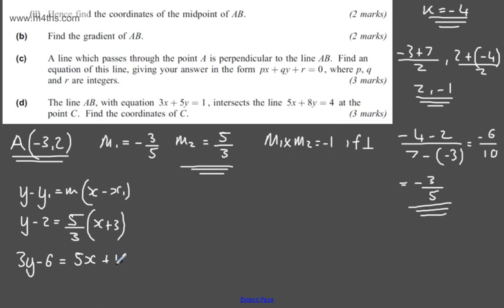I'm going to subtract 3y from both sides and add 6 to both sides of the equation. That's going to give me 5x - 3y + 21 = 0. So we can see the value of P is 5, the value of Q is -3, and the value of R is 21.